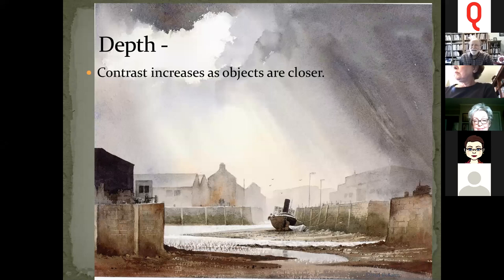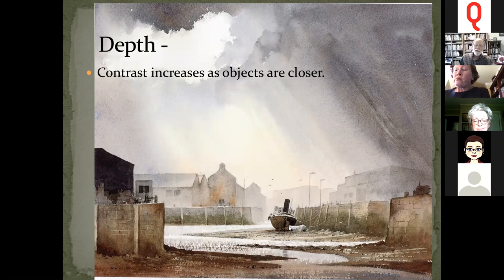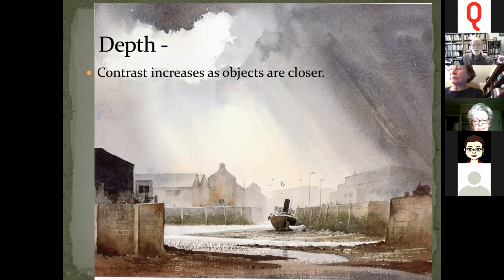Contrast increases as objects get closer — you lose color contrast and tonal contrast as things recede, due to aerial perspective. Things get fuzzy and hazy as you go away. In a harbor painting by David Bellamy, the focal boat is very dark with a bright white highlight, while the background washes out to almost pure white, giving a strong sense of depth.